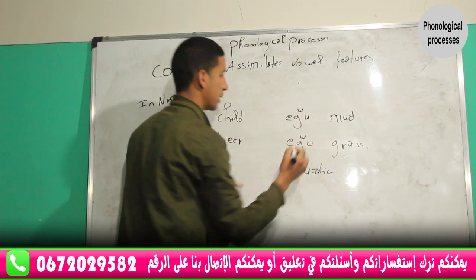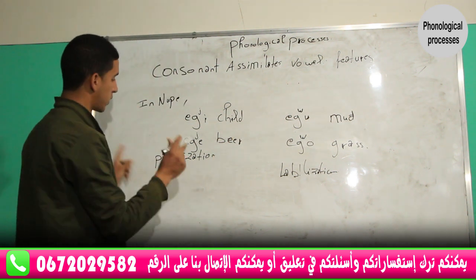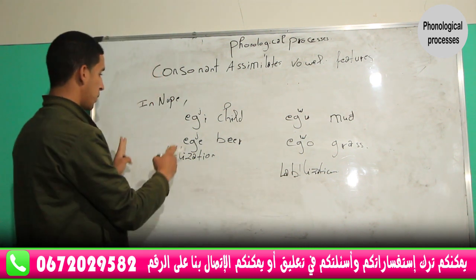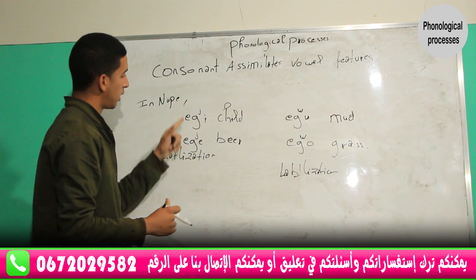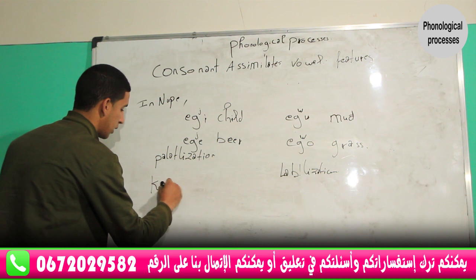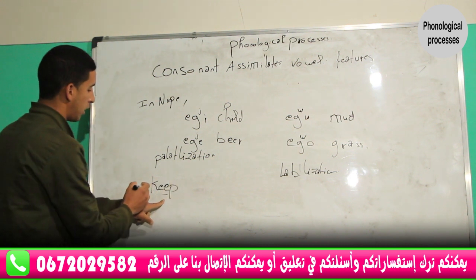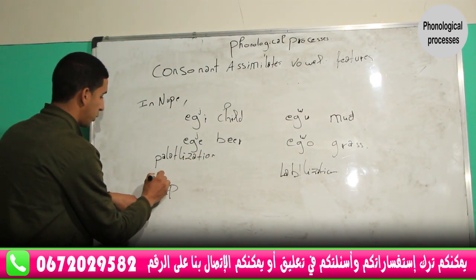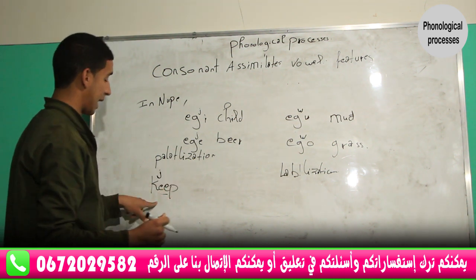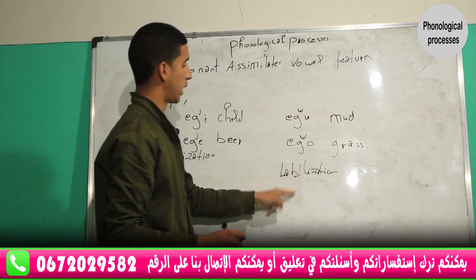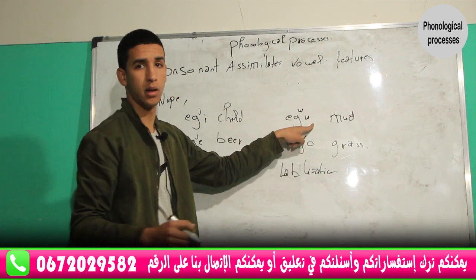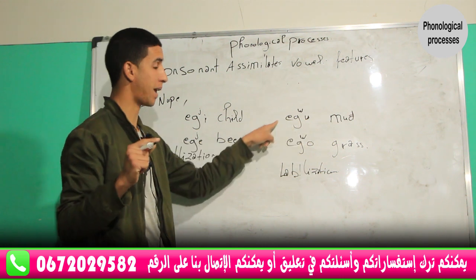We have two rules: the first rule is about palatalization, and the second rule is about labialization. For the first rule, the consonant must precede a front vowel — like in the English word 'keep', which has a front vowel, so the K sound will be palatalized. Similarly, whenever a consonant precedes a round vowel, it will be labialized.